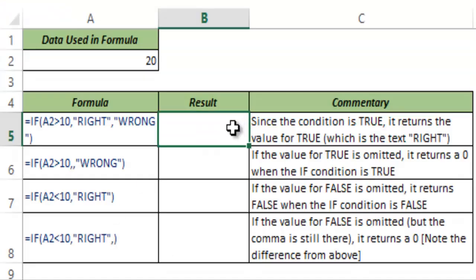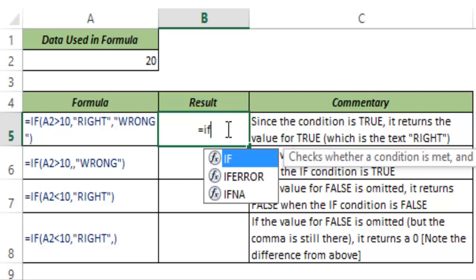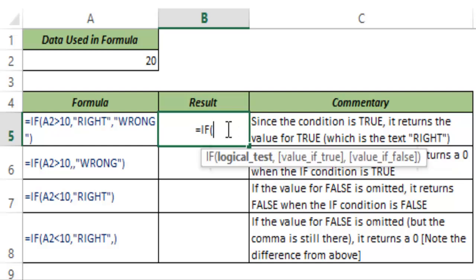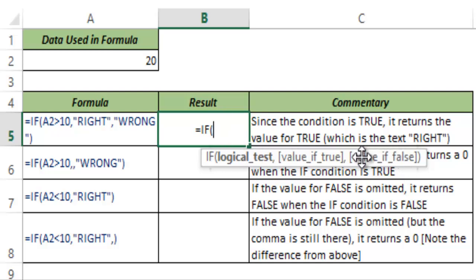The IF formula takes three arguments. I type IF and hit Tab to auto-complete the function. First is a logical test where IF analyzes a condition which returns either true or false. When it returns true you can specify a value that the formula should return, and if it returns false then again you can specify a value that it should return.